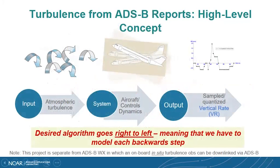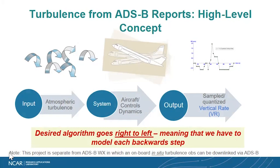The algorithm works by taking vertical rate data from ADS-B and inferring what turbulence produced those vertical rates. It's important to note that there is a separate effort called ADS-B Weather, in which an onboard in-situ turbulence observation can be downlinked via ADS-B — that is a totally separate piece of work. What we're doing here is taking the regular velocity messages from existing ADS-B and trying to infer turbulence from that.